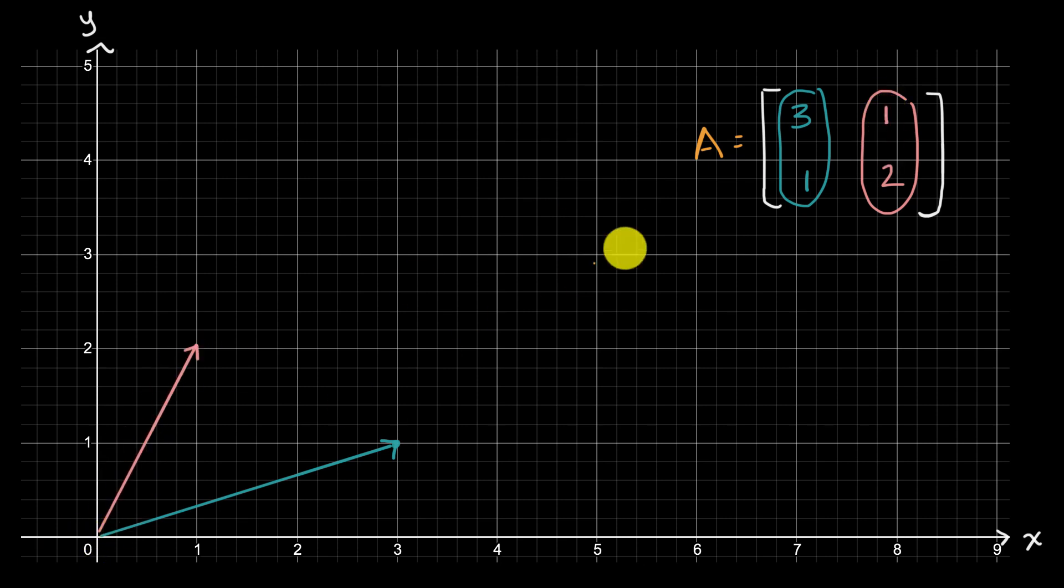Now, an interesting interpretation of the determinant of this two by two matrix is that the absolute value of the determinant is the area of the parallelogram defined by these two vectors. What do I mean by the parallelogram defined by these two vectors?